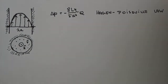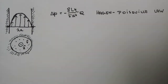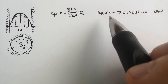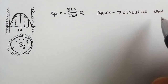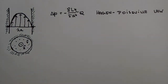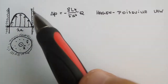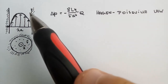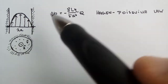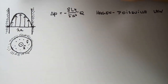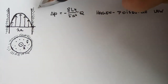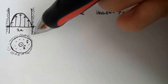Hello and welcome to the next video. In this video we will be discussing the derivation of the so-called Hagen-Poiseuille law. It relates the pressure difference between two points in an infinite tube through which a fluid is moving.